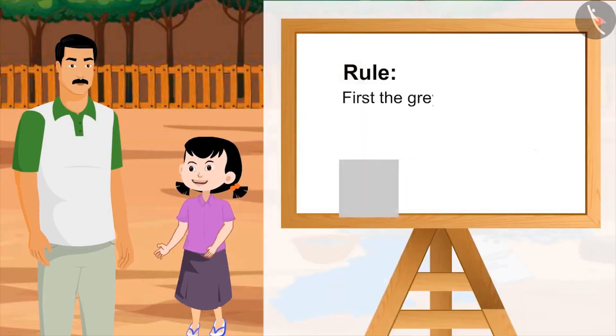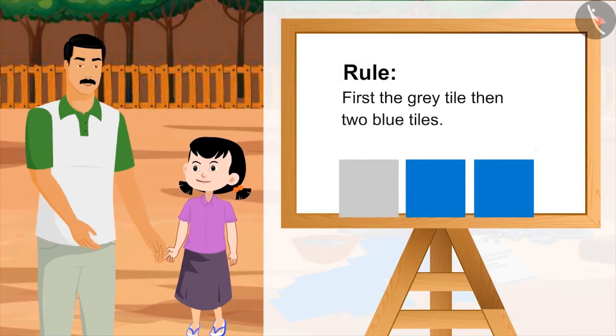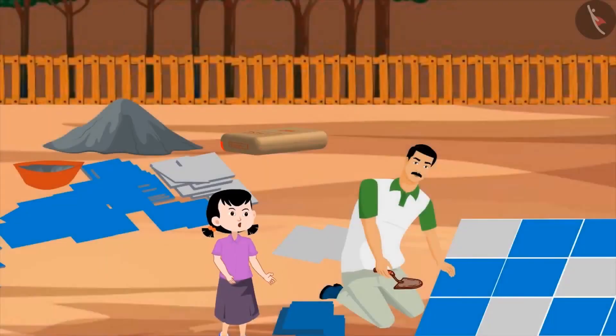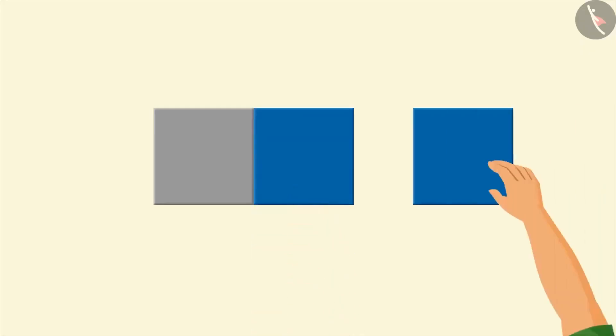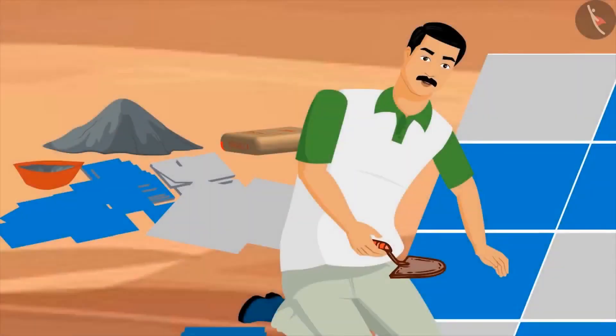We have blue tiles in more numbers. So, we can place one grey tile and then two blue tiles. Wow! You have given a great idea. Come, let's tile the courtyard using this pattern. Can I help you in this? Yes, sure. Like this? Yes, right.